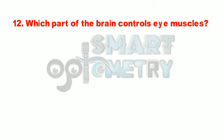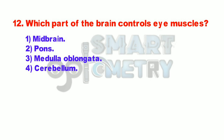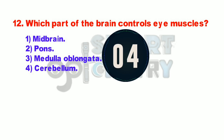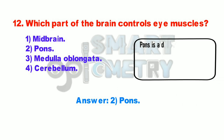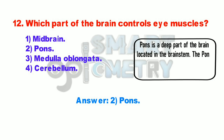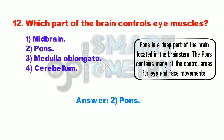Q12. Which part of the brain controls eye muscles? 1. Midbrain. 2. Pons. 3. Medulla oblongata. 4. Cerebellum. Pons is the deep part of the brain located in the brainstem. The pons contains many of the control areas for eye and face movements.